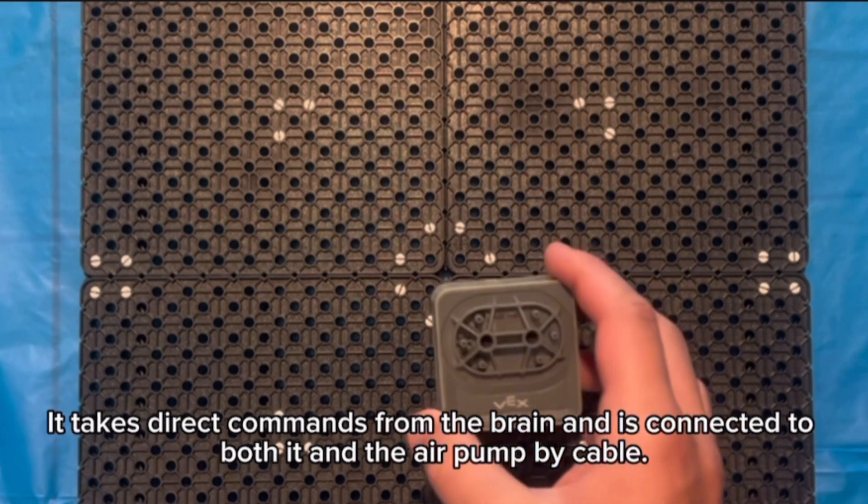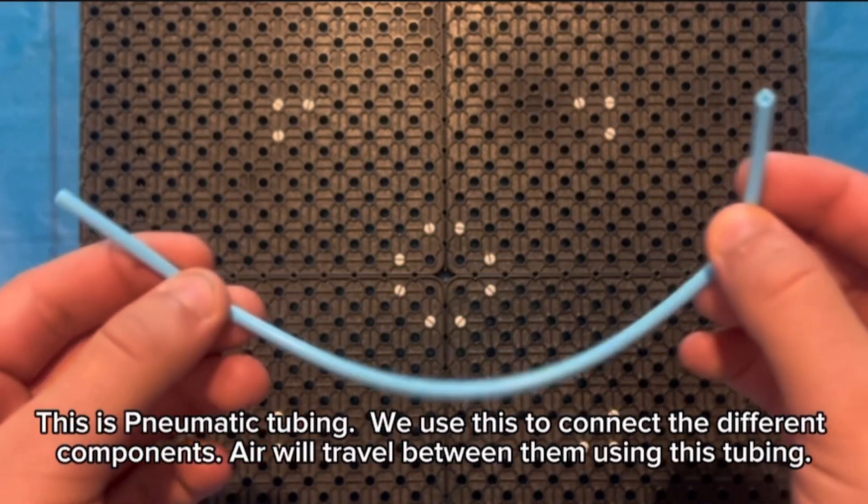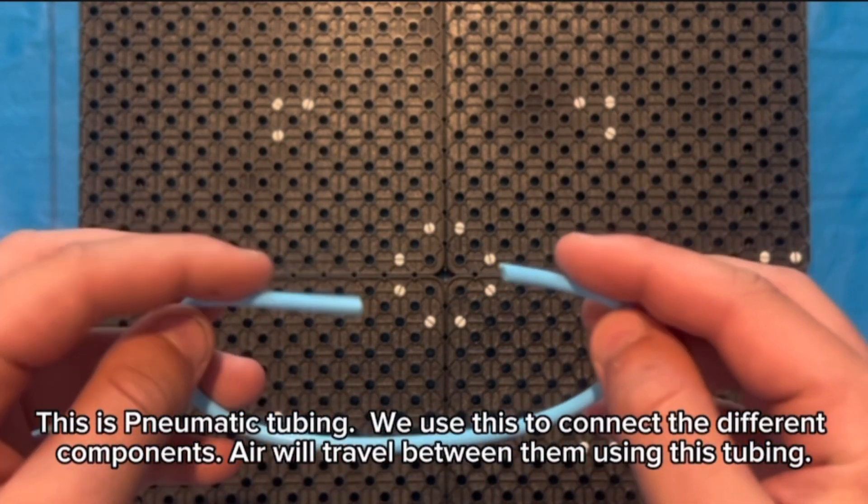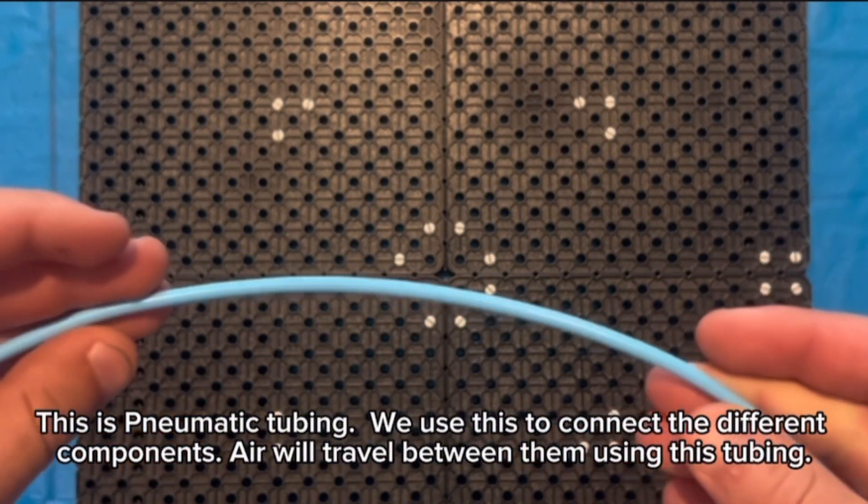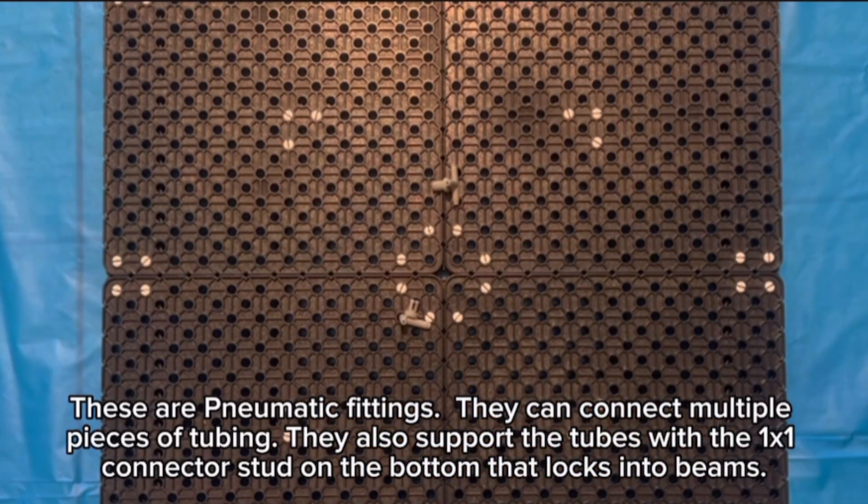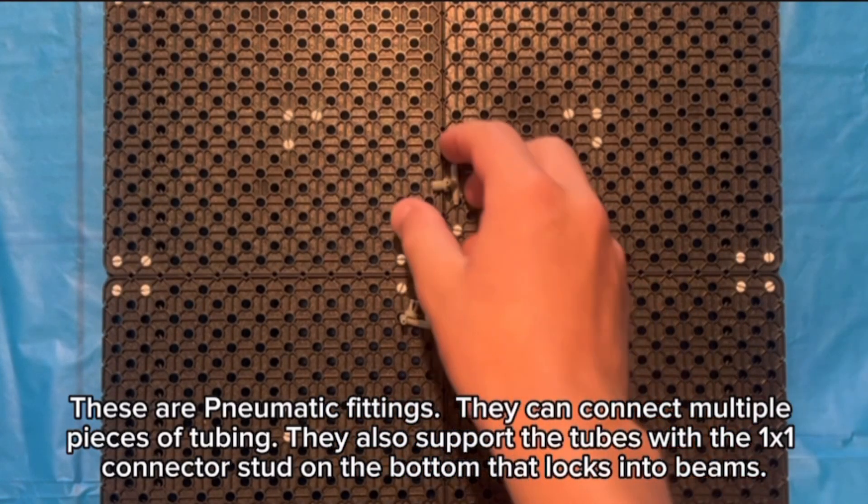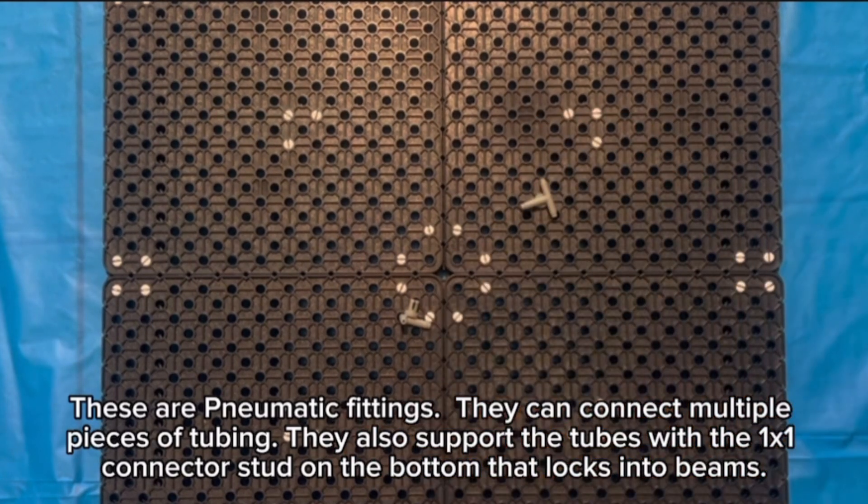It takes direct commands from the brain and is connected to both it and the air pump by cable. This is pneumatic tubing. We use this to connect the different components. Air will travel between them using this tubing. These are pneumatic fittings. They can connect multiple pieces of tubing. They also support the tubes with the one by one connector stud on the bottom that locks into beams.